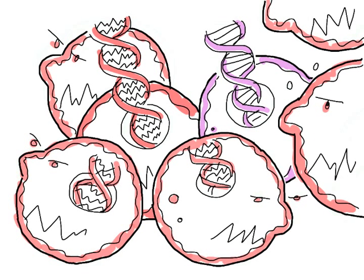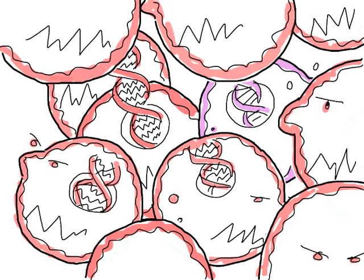Cancer cells divide too fast, crowd out other cells, and grow where they are not supposed to grow.